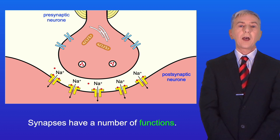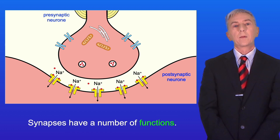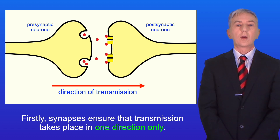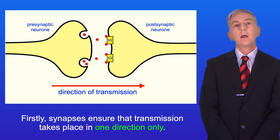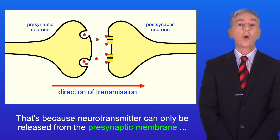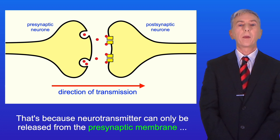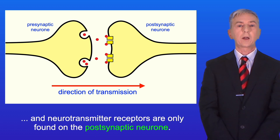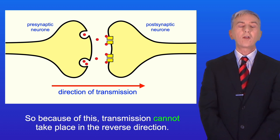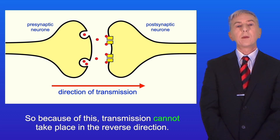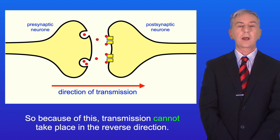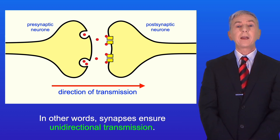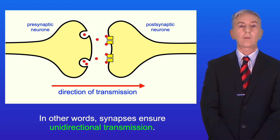Now synapses have a number of functions. Firstly, synapses ensure that transmission takes place in one direction only. That's because neurotransmitter can only be released from the presynaptic membrane, and neurotransmitter receptors are only found on the postsynaptic neuron. So because of this, transmission cannot take place in the reverse direction. In other words, synapses ensure a unidirectional transmission.